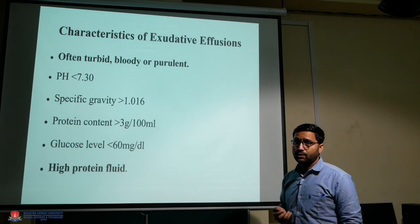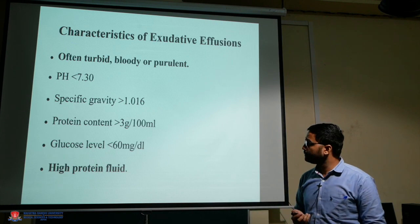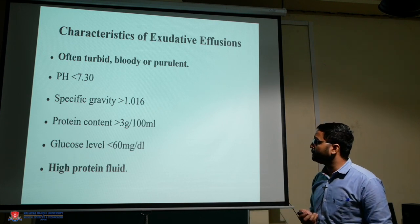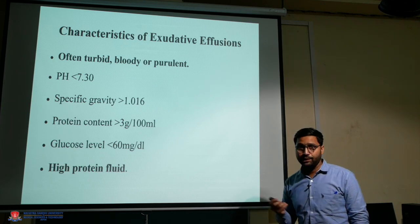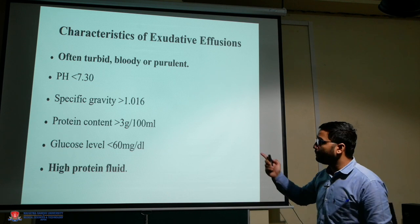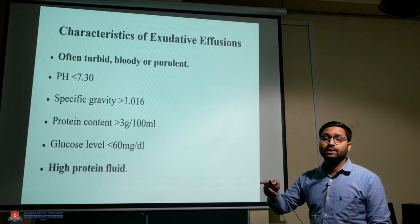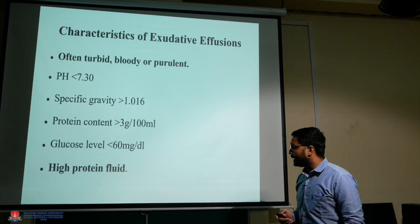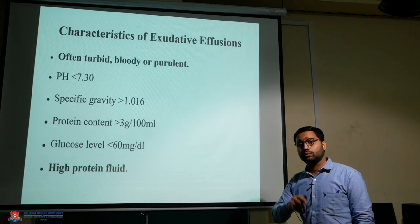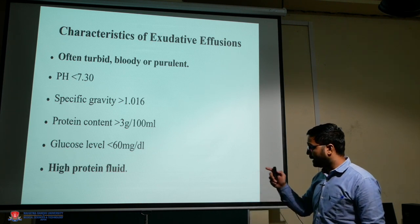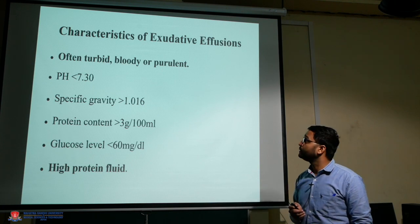The characteristics of exudate effusion: the fluid is often turbid, bloody, and purulent. The pH is less than 7.30, specific gravity is more than 1.016, and protein content is more than 3 grams per 100 ml. In transudate, protein content is less than 3 grams. Glucose level is less than 60 mg per deciliter, compared to transudate where glucose equals serum level. High protein fluid content is present in exudate effusion.